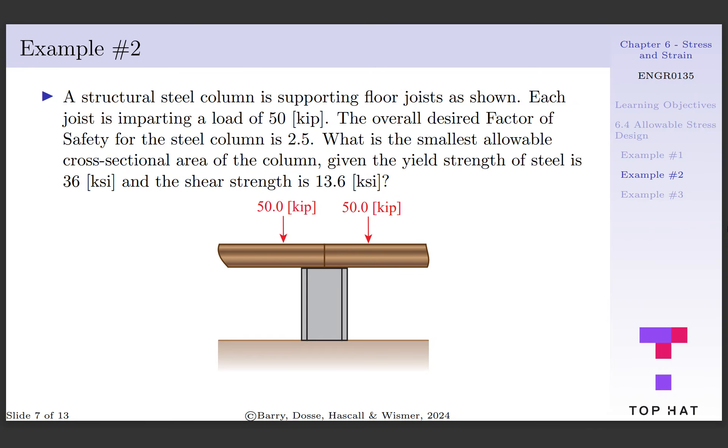Let's look at another example. Here we have a structural steel column supporting two floor joists. Each joist is imparting a load of 50 kip and we want to have a factor of safety of 2.5.